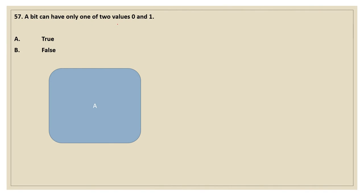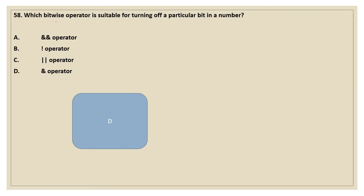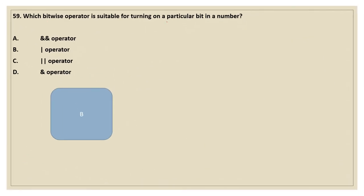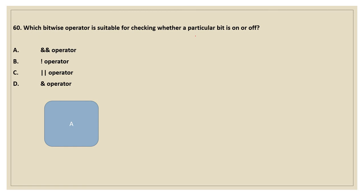57th question: a bit can have only one of two values, 0 or 1 — yes, it is true. A bit can hold a 0 value or a 1 value. 58th question: which bitwise operator is suitable for turning off a particular bit of a number? For the turn-off operation, the AND operator is the best. Option D is the answer. 59th question: which bitwise operator is suitable for turning on a particular bit? The OR operator is the best for turning on. 60th question: which bitwise operator is suitable for checking whether a particular bit is on or off? The AND operator by default is used for checking whether the bit is on or off.